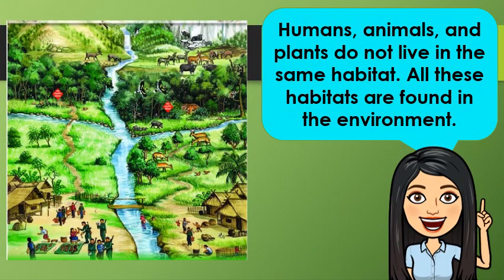Humans, animals, and plants do not live in the same habitat. All these habitats are found in the environment. There are living things that can survive in cold weather while others prefer hot weather.